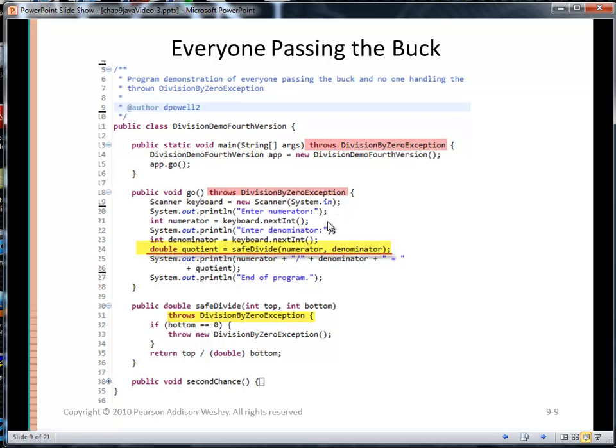Here I'm showing the example where everybody passes the buck. In this case, Go does not have a try-catch block. It has decided instead to pass the buck and declare that it throws a Division by Zero exception. So when it calls Safe Divide, if Safe Divide throws a Division by Zero exception, Go, in turn, is going to return immediately to the calling main program by throwing a Division by Zero exception. Main, in turn, could have had a try-catch block. It chose not to, and it, in turn, is going to throw the Division by Zero exception. So nobody is catching the exception.